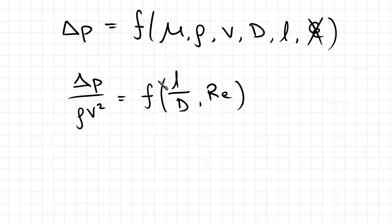So if we rearrange that, take that out of our function, we get delta P equals half rho V squared times L over D times function of Re.